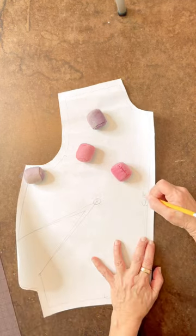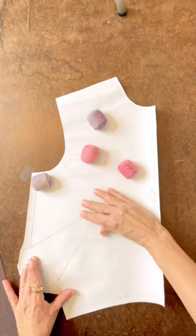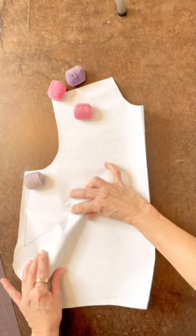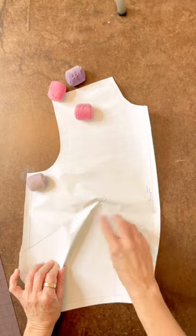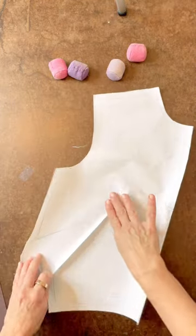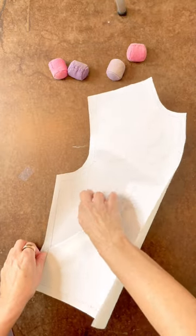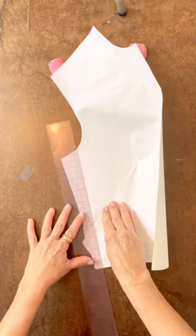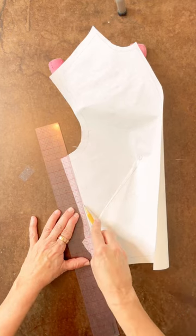This is center front. True your dart holding the bottom leg first towards the center front. Concave it. Bring it over to the other side. Correct the side seam.